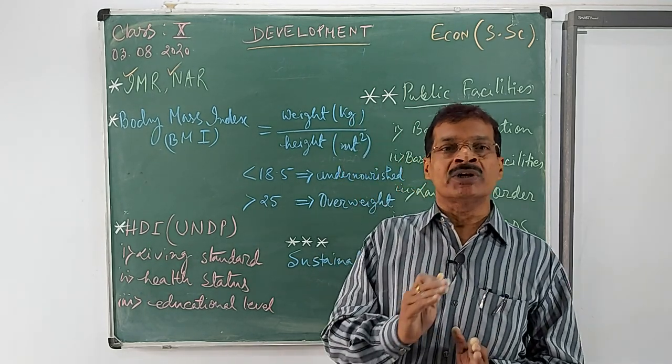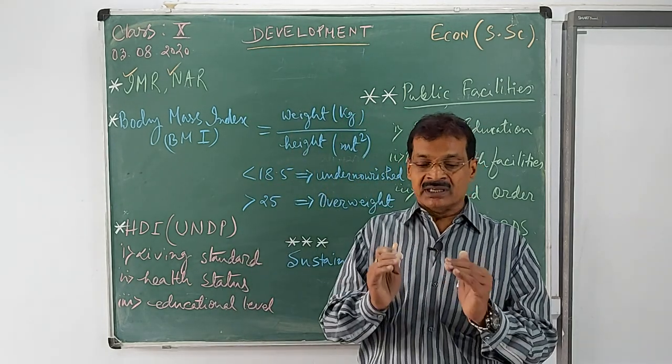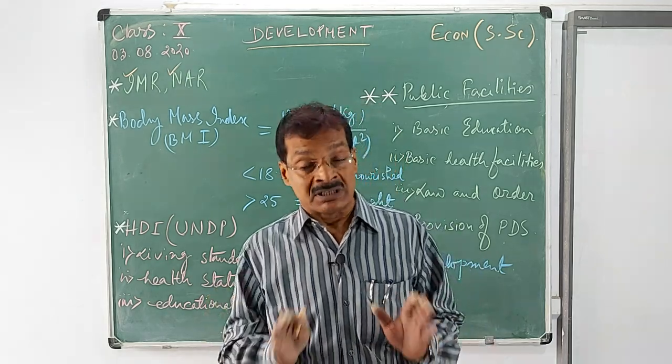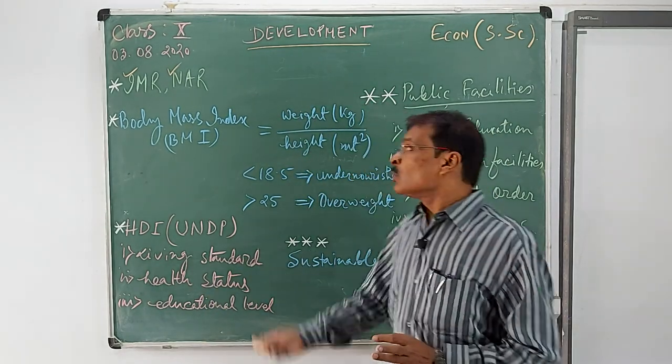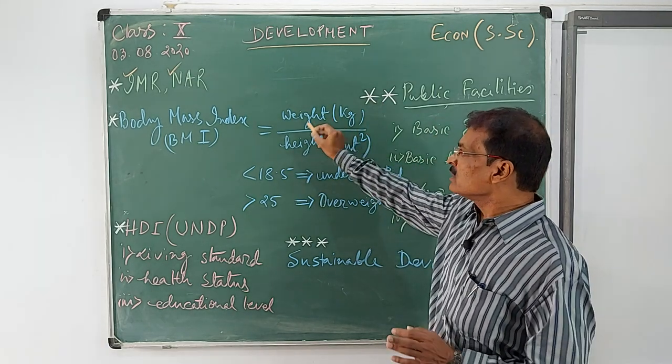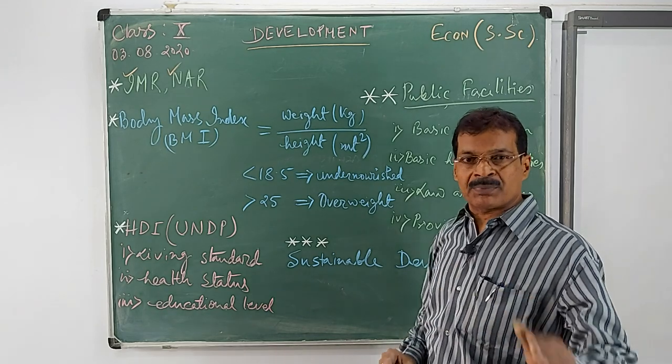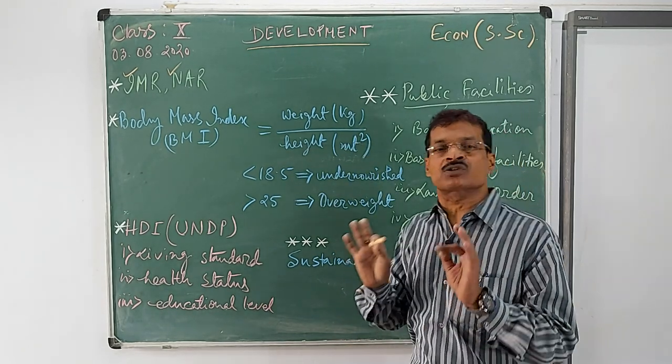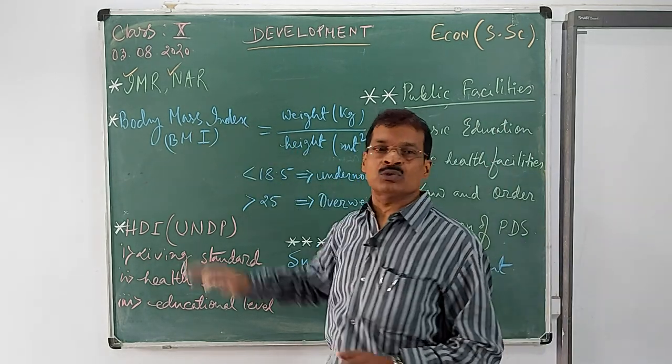But if a child is not going through proper medications and proper nutritional food, when he or she becomes adult, his or her body mass index cannot be proper. We take the weight in kg and divide it by the height of that person in meter square, and the body mass index will be calculated.